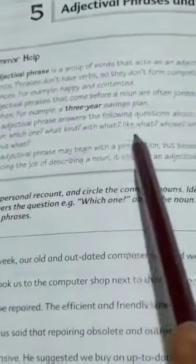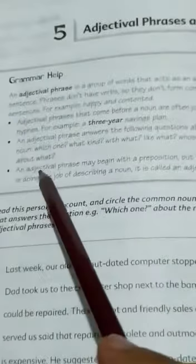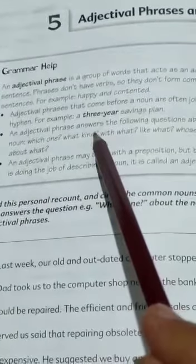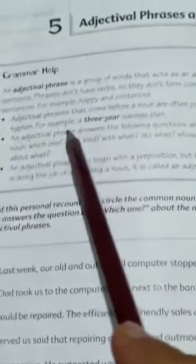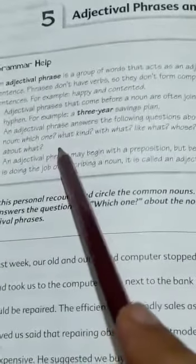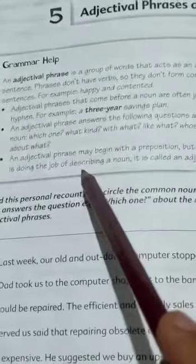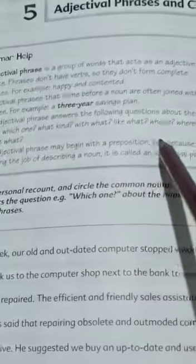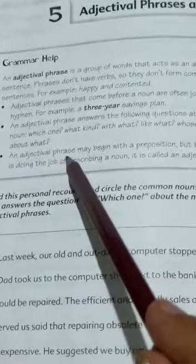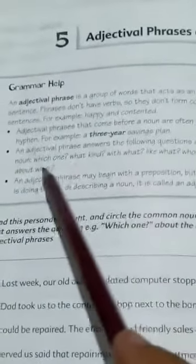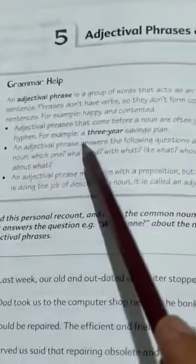And adjectival phrase answers the following questions about the noun. So, jaise ke aap ko bataya hai ke adjectival phrase jo hai us ka function yeh hai ke woh noun ko describe karta hai. Theek hai? Aur yeh complete sentence nahi hota. Aur yeh in questions ke bare mein humein adjectival phrase se pata chalta hai: Which one? What kind? With what? Like what? Whose? Where? And about what? So, whenever you have to answer these questions, it will be an adjectival phrase.